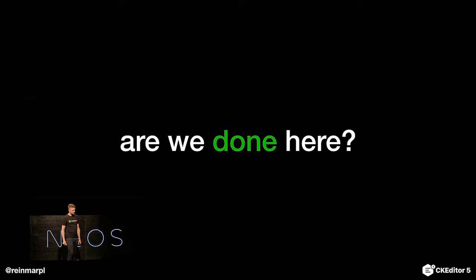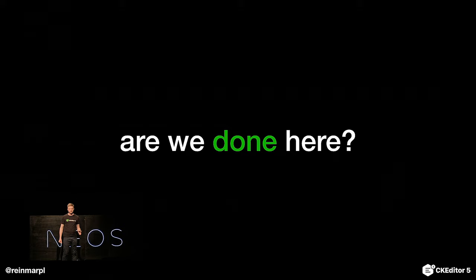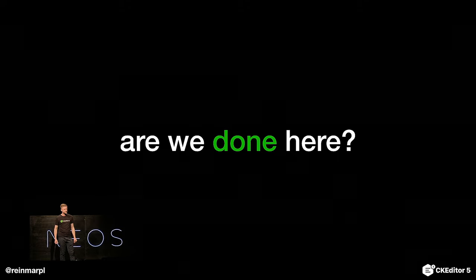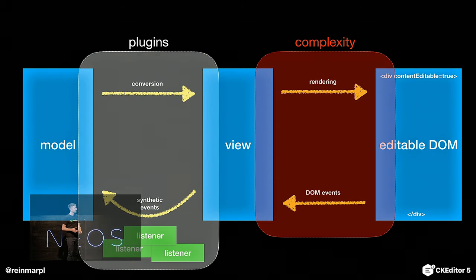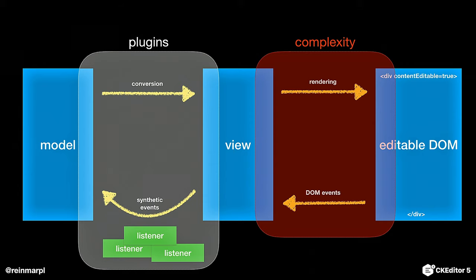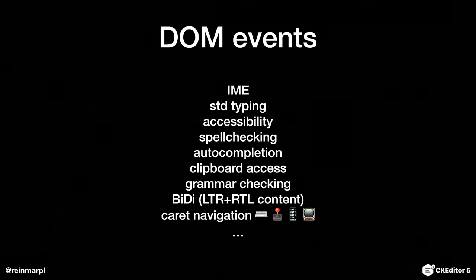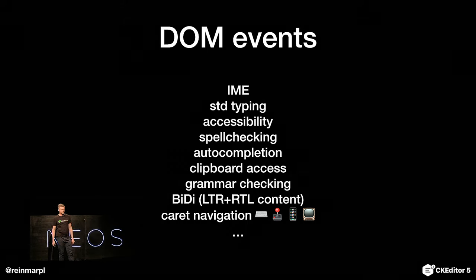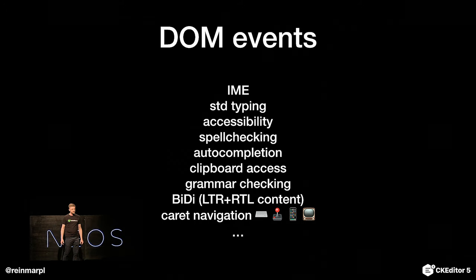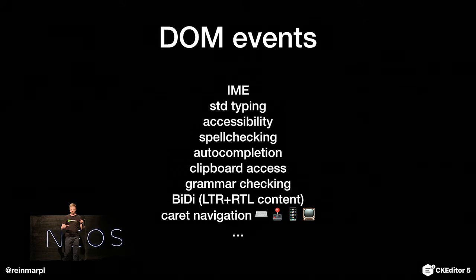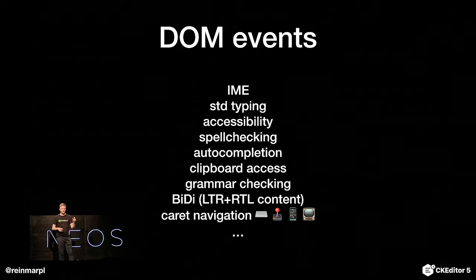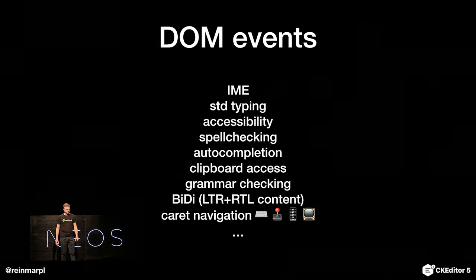So are we done? For plugin developers, yes — they have a really nice picture now. But for us, not really, because we managed to hide the complexity but we didn't get rid of it. The complexity is still there, and it's in the rendering and the DOM events. So let's talk about DOM events first. The problem with the DOM today is it doesn't have that many events or APIs that we'd need to control editing. We are often guessing what the user did. For instance, when the user types, we diff the old structure with the new text and learn what character was inserted — and this is really tricky if you consider spell-checking.